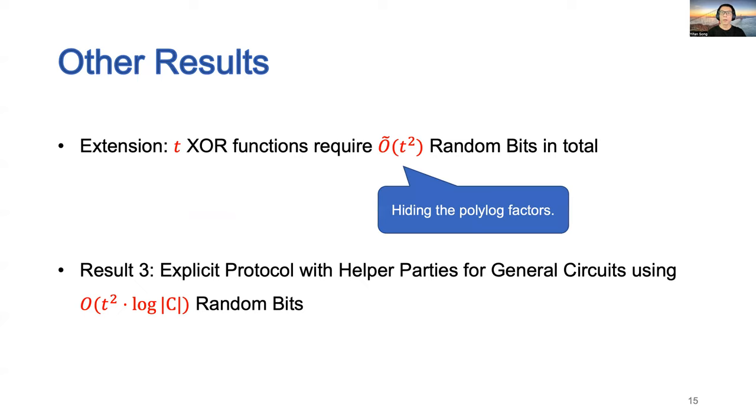Besides our main results, we also show that running t XOR functions require Õ(t²) random bits, which means that each execution only requires Õ(t) random bits.